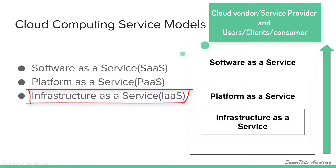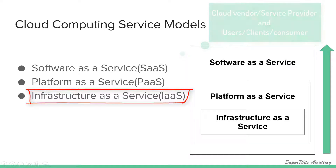The last service model is Infrastructure as a Service. This provides virtual machines, virtual storage, virtual infrastructure, and other hardware assets as resources that the client can provision — similar to buying hardware and using it for various purposes, but delivered virtually over the network, like renting hardware. Here, only the infrastructure is managed by the vendor; all other aspects like application development and deployment are managed by the client. Best examples are Amazon EC2 (Elastic Cloud Compute), Google Cloud, and GoGrid.